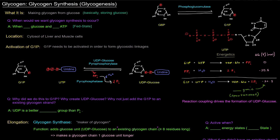In this video, we're going to talk about making glycogen, glycogen synthesis, also known as glycogenesis. Glyco referring to glycogen, genesis meaning to make. So what is that? It's literally what it sounds like, making glycogen from glucose. Basically, we're storing glucose when we make glycogen.